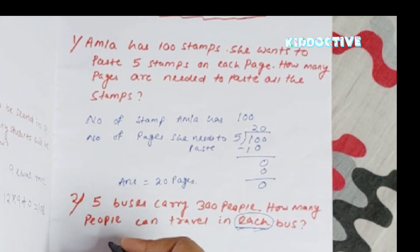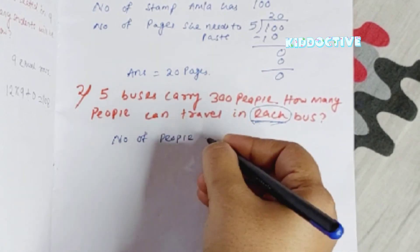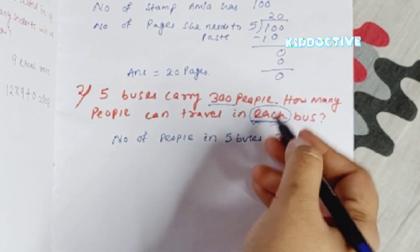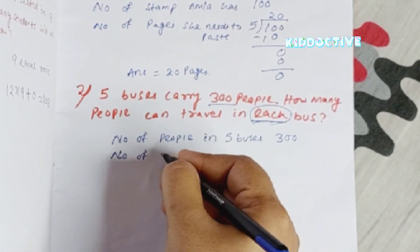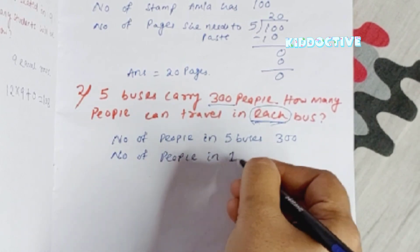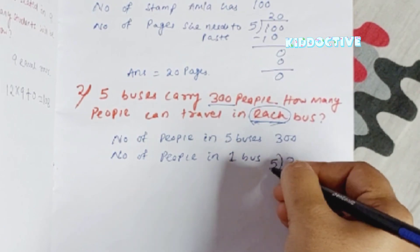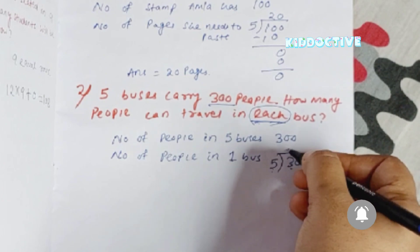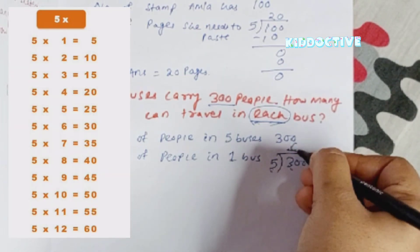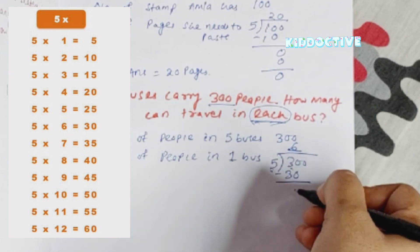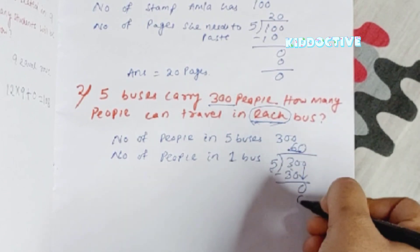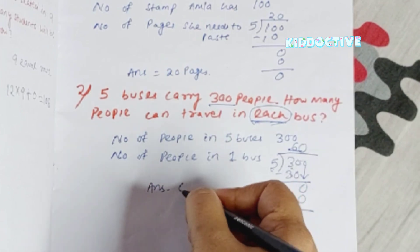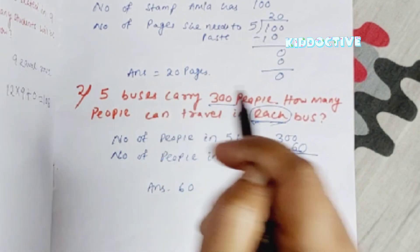So how will we write this: number of people in 5 buses is 300. 'Each' means single, so we need the number of people in one bus. We represent this as 300 divided by 5. Since 5 is more than 3, we consider 2 digits: 30 — five 6's are 30, 30 minus 30 is 0, bring down the 0, five 0's are 0. The answer is 60. So 60 people can travel in each bus.